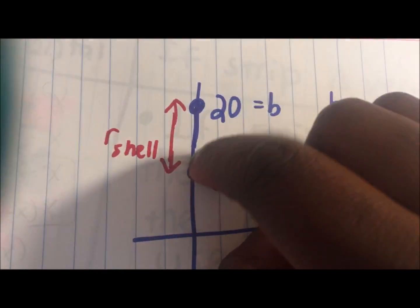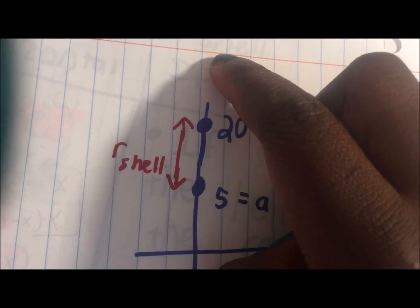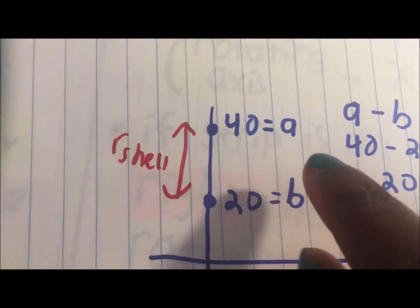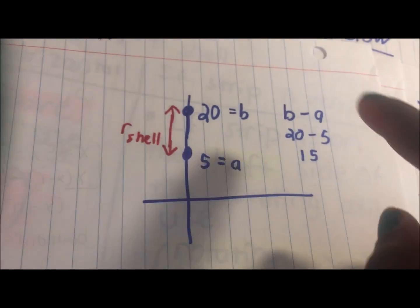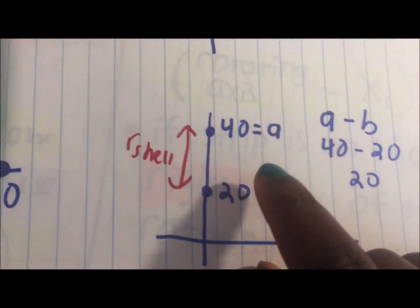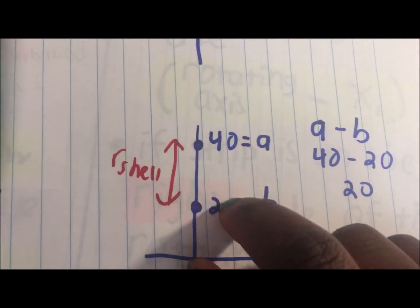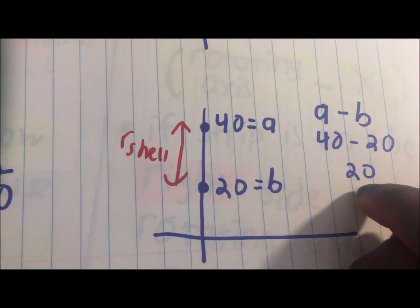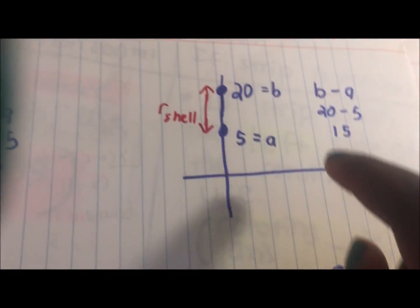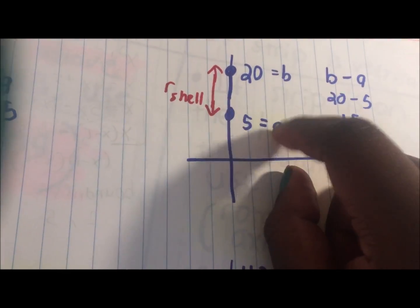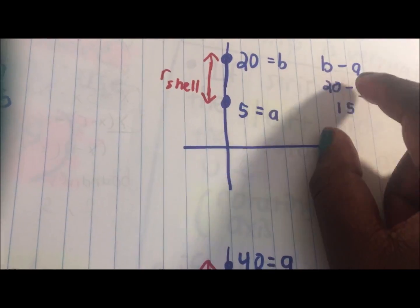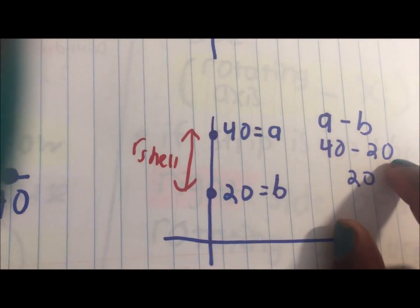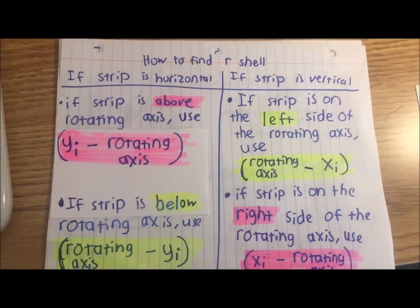What if I put a all the way up to 40? If I put a up here, you no longer would do b minus a. Now you would do a minus b to find the distance between these two — 40 minus 20, which is 20. So r_shell is 20. When a was below b, you did b minus a; when a is above b, you did a minus b. That's how you find r_shell.